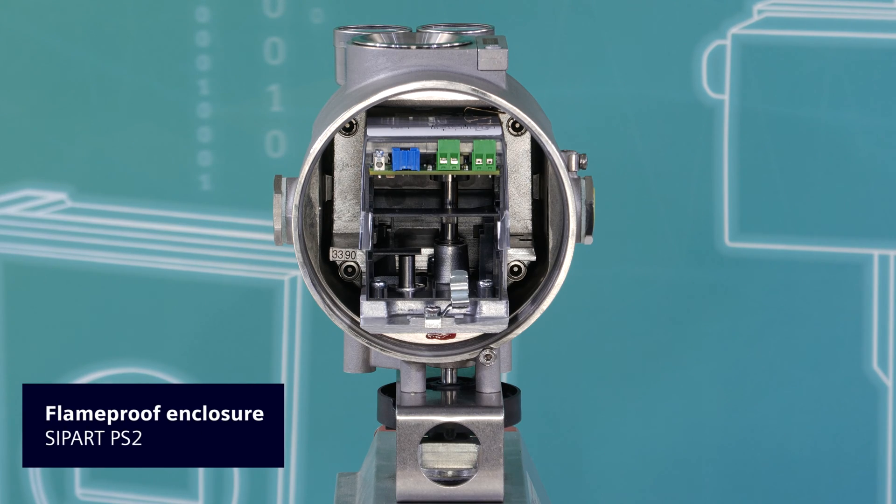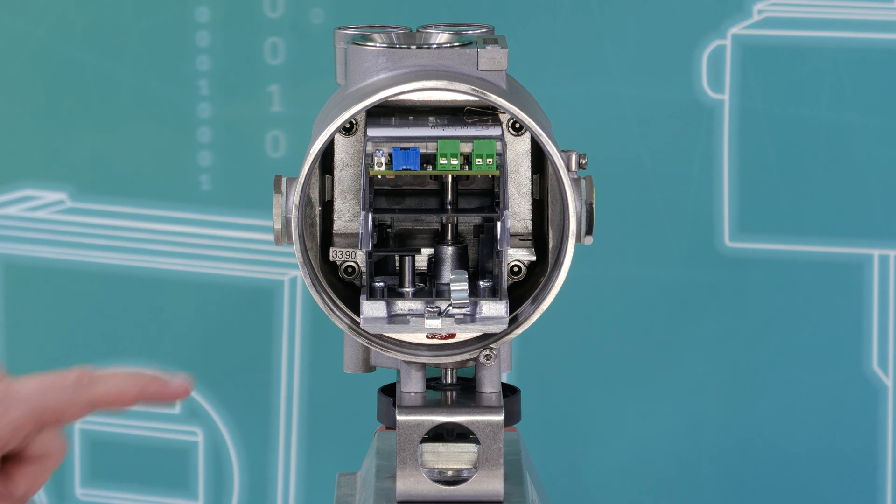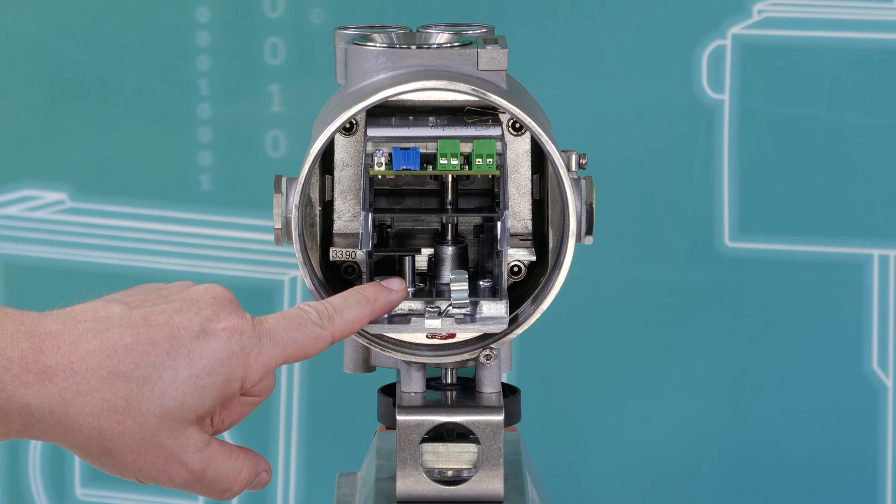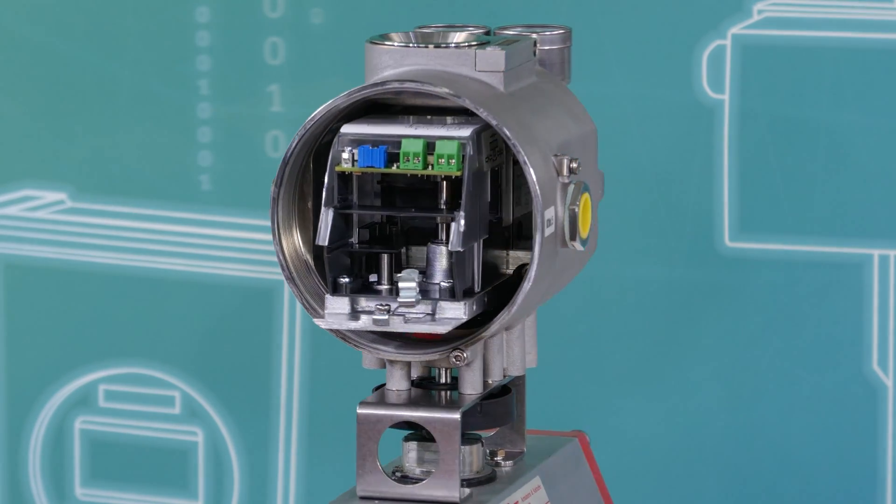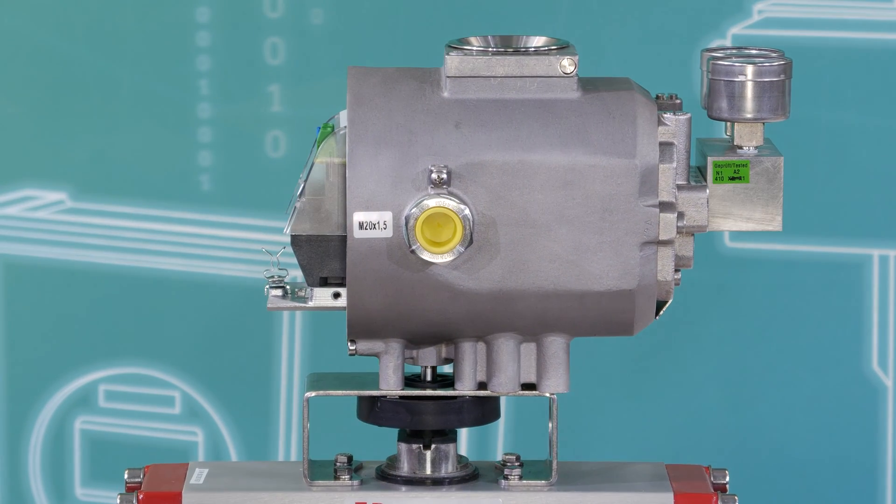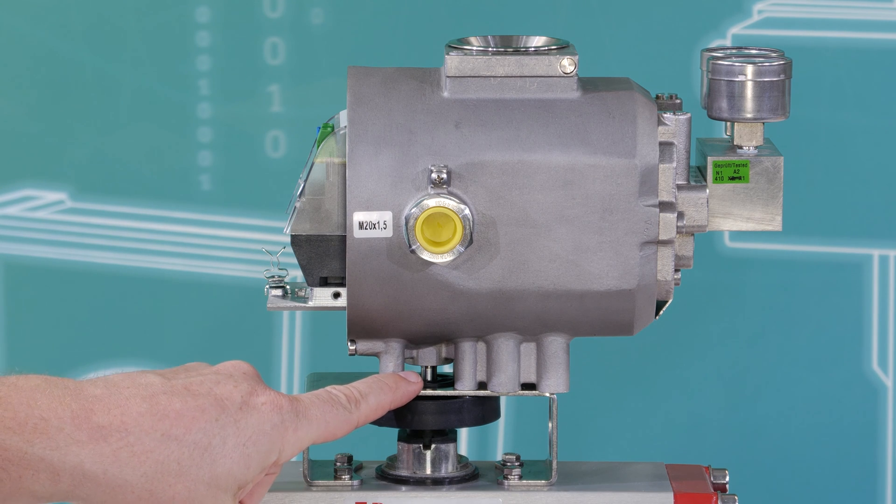Here you see the flameproof enclosure device. This version is available without the transmission switch and without the friction clutch.